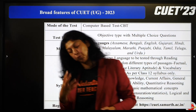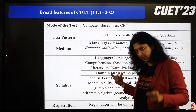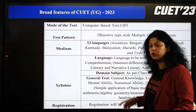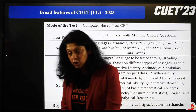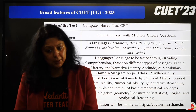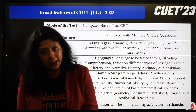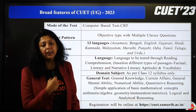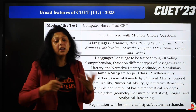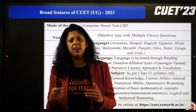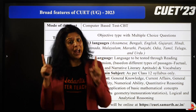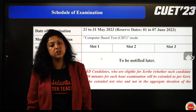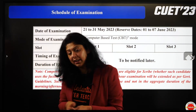Syllabus में आपको form में अपने domain subject choose करने हैं। Class 12 वाले language choose करनी है जिसका different types of passages वाला test होगा। And general test जिस पे general knowledge, current affairs, general mental ability, numerical ability, analytical reasoning, mathematical concepts, basic arithmetic algebra check होगा। Registration के लिए: cuet.samarth.ac.in।